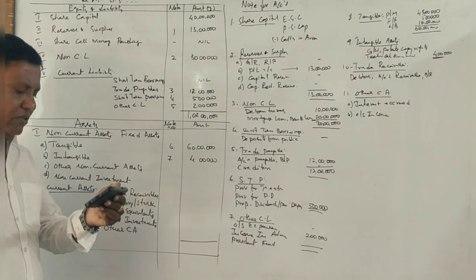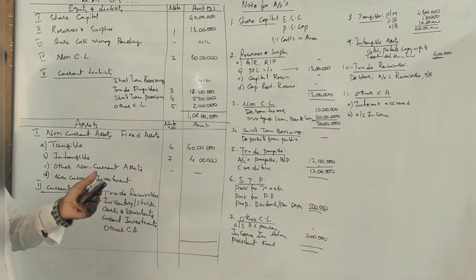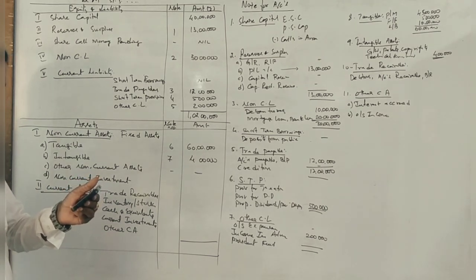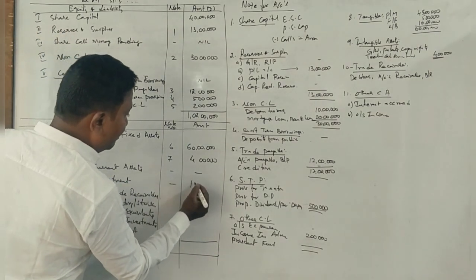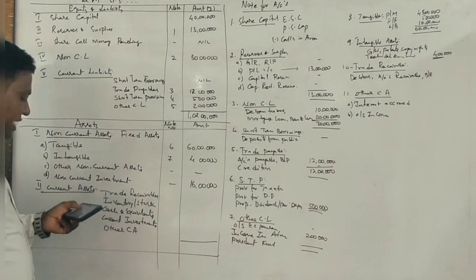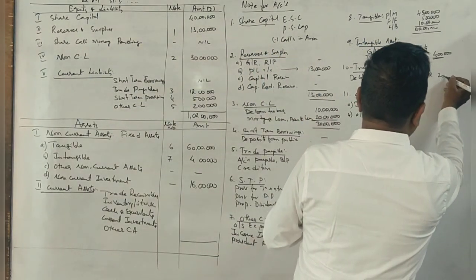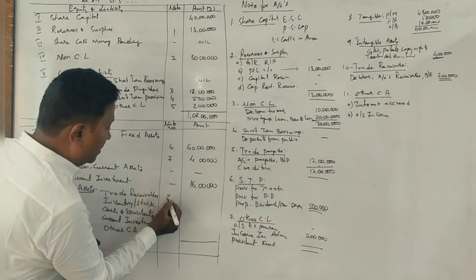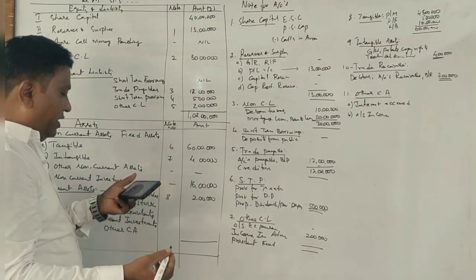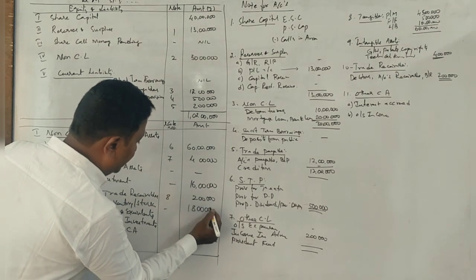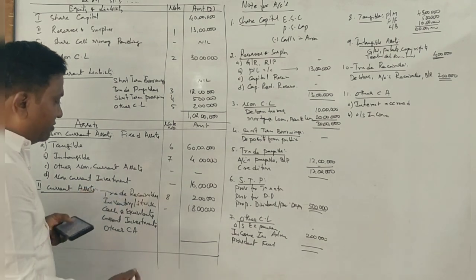Other non-current assets: non-current investments — investment in flat — is 16 lakhs. Next, trade receivables (accounts receivable) are 2 lakhs. Inventory is 18 lakhs. Cash and cash equivalents are 2 lakhs. Current investments — none.